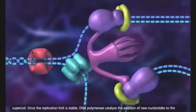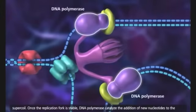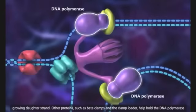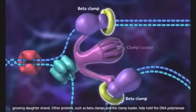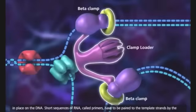Once the replication fork is stable, DNA polymerase catalyzes the addition of new nucleotides to the growing daughter strand. Other proteins, such as beta-clamps and the clamp loader, help hold the DNA polymerase in place on the DNA.